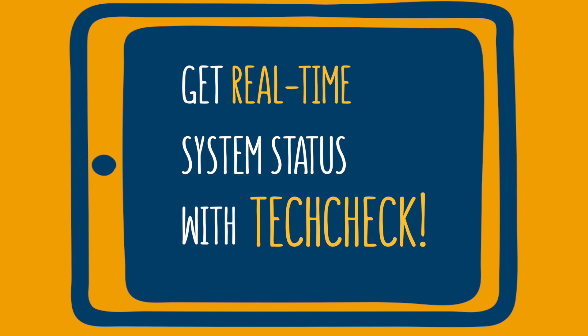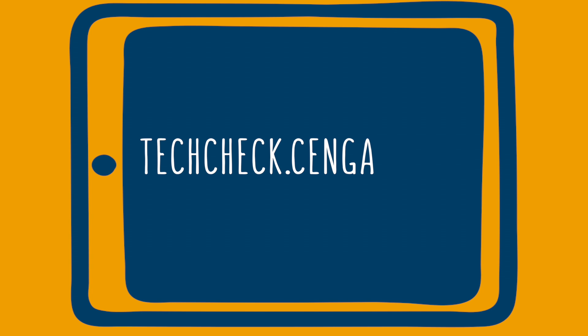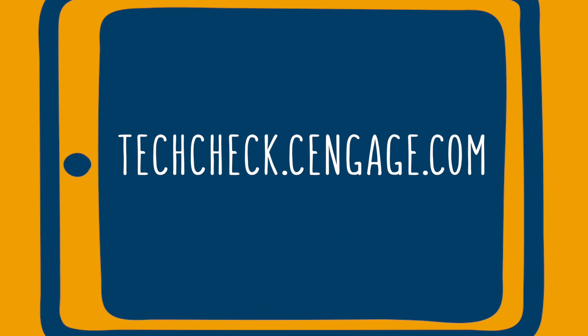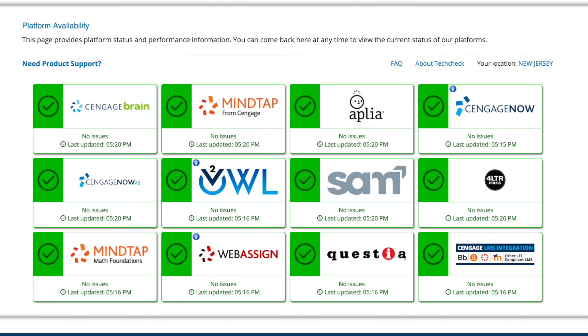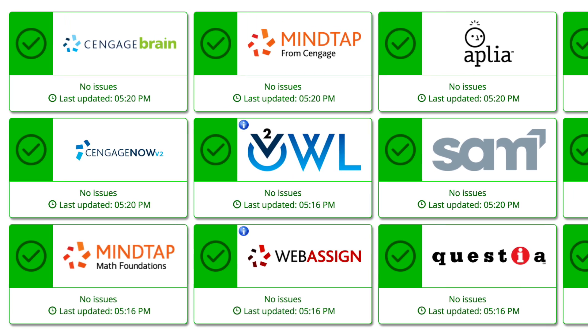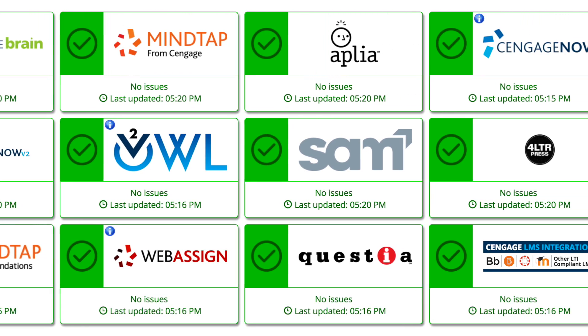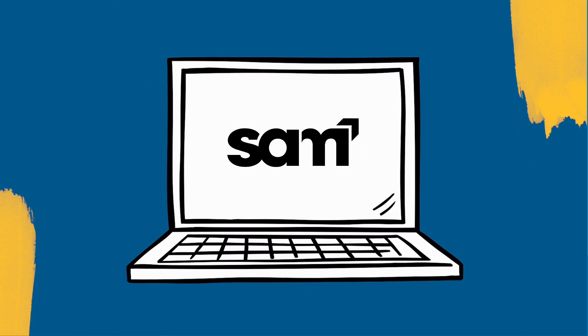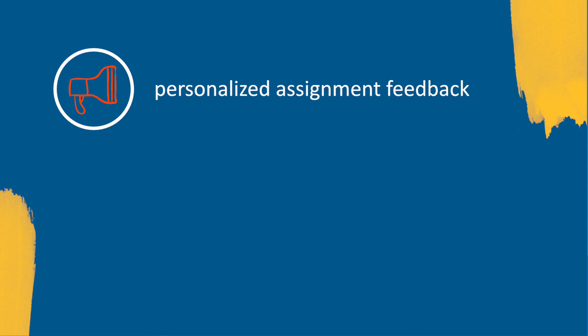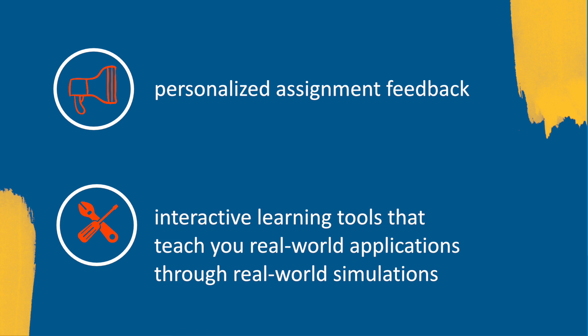Get real-time system status with Tech Check — techcheck.cengage.com provides immediate insight into system performance so you can quickly see if Cengage is experiencing technical difficulties. And now that you're here, explore your SAM course, filled with helpful resources.